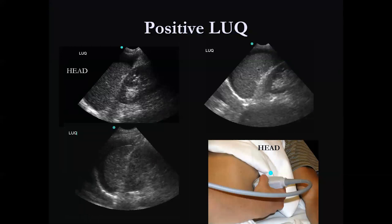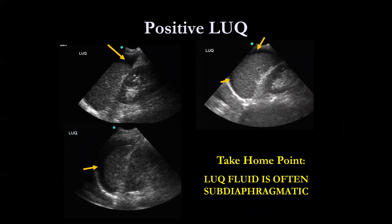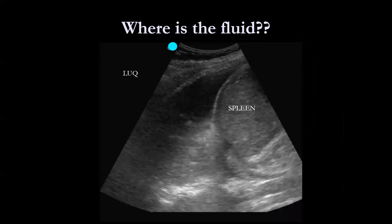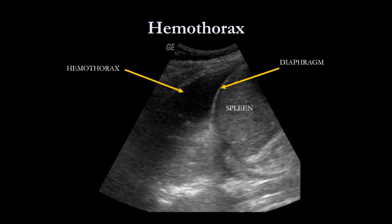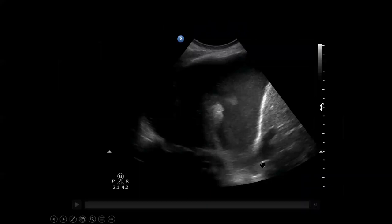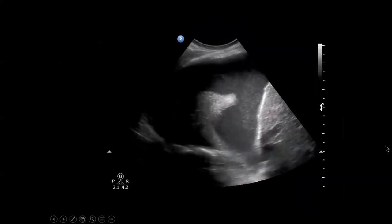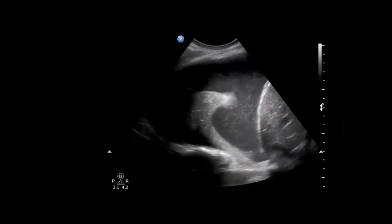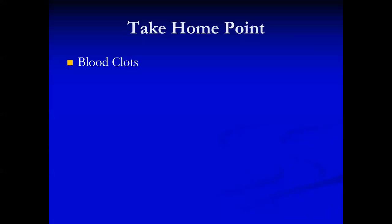For a positive left upper quadrant view, notice that the free fluid is actually above the spleen in the subdiaphragmatic space — this is not uncommon and will often be the first place you see free fluid. You can see the bright white stripe of the diaphragm, and above it is the fluid — that's a nice hemothorax. Here's another example of a hemothorax where you can actually see aerated lung flapping around in the hemothorax. Also notice that the fluid is not anechoic — some of it has layered out. Keep in mind that blood clots. If you're getting a trauma patient transferred a few hours out, don't be surprised if the blood has become echogenic as it starts to clot.